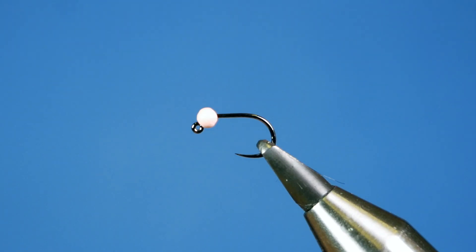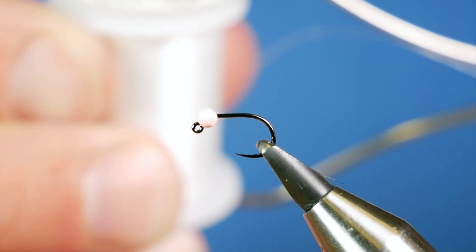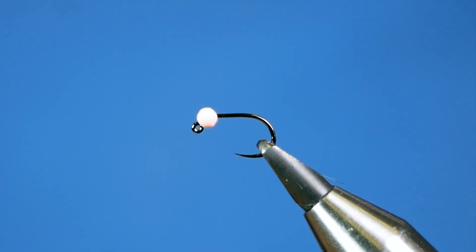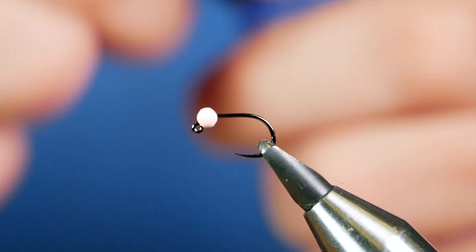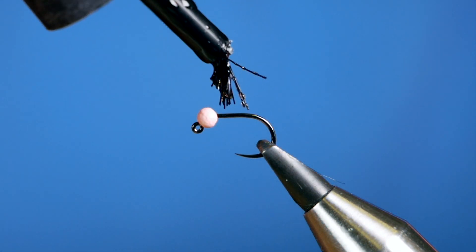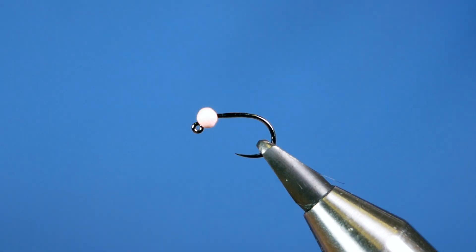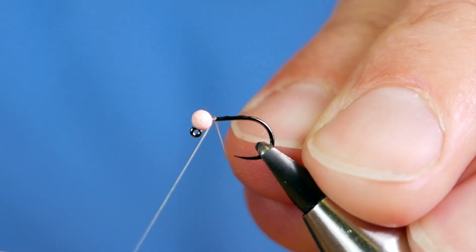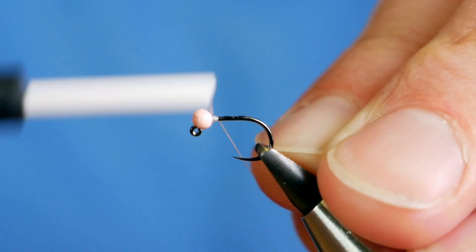So the thread I'm going to be using today is the Vivas GSP. It's at 30 denier and as you can see, it's a white thread. First thing I'm going to do with this is add a small touch of superglue to the shank of the hook. That just gives me a good bed to get my silk down.